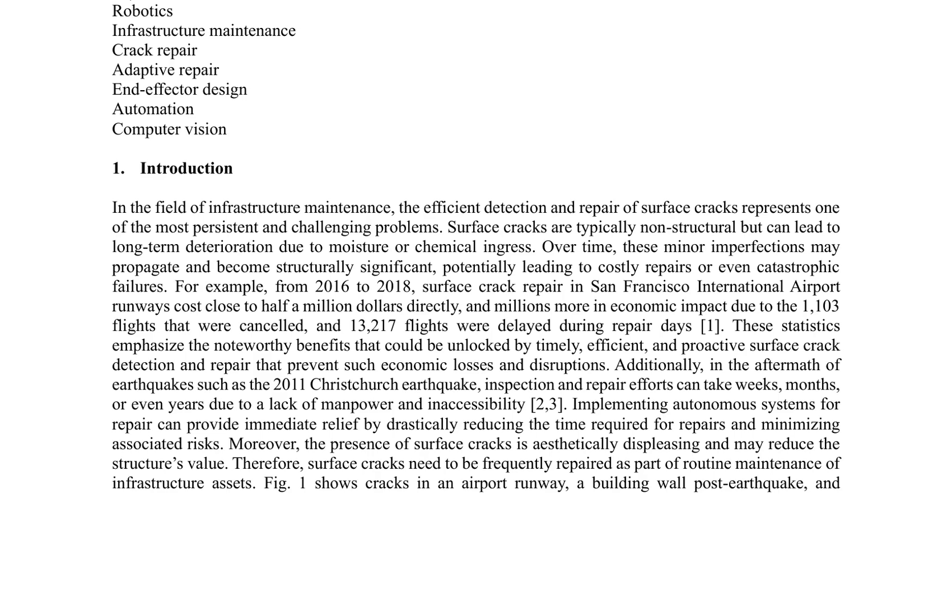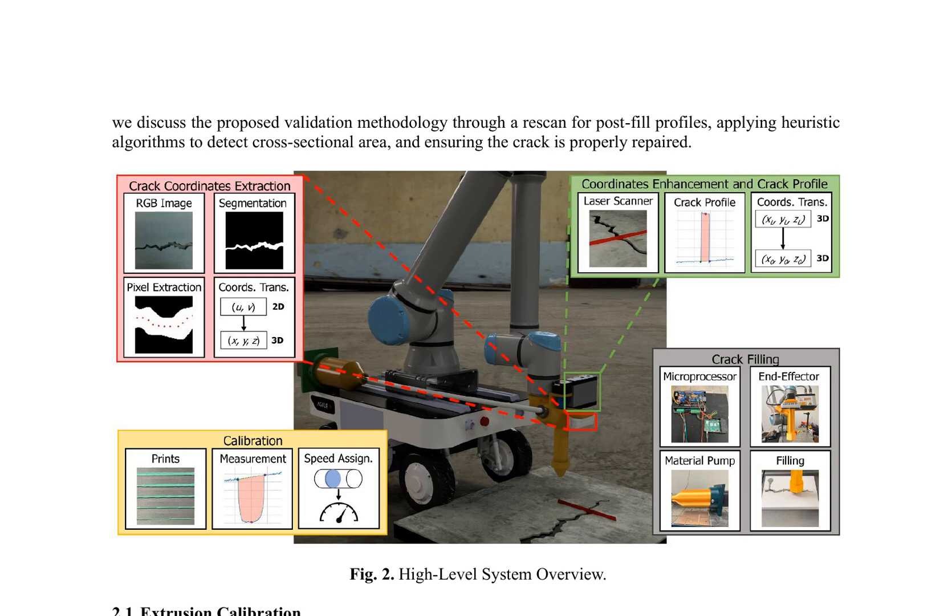The study demonstrates that an adaptive system for crack filling is more efficient and effective than a fixed-speed approach, with experimental results confirming precision and consistency. The system integrates a robotic arm and custom end-effector, combining RGBD camera and laser scanner data for precision measurements.